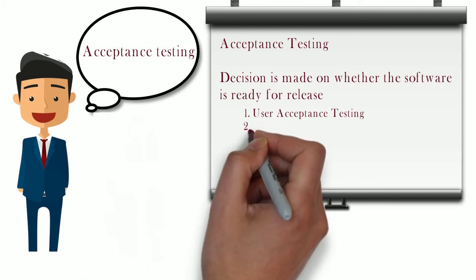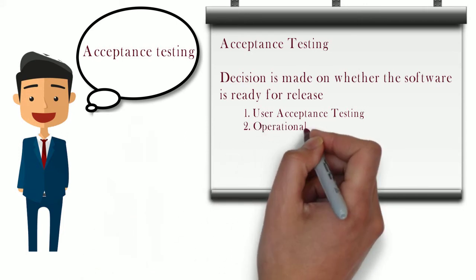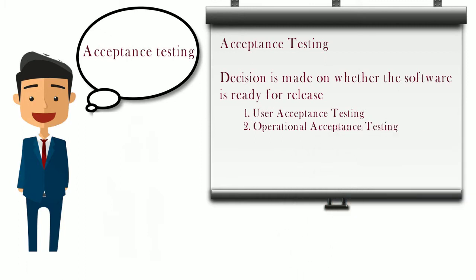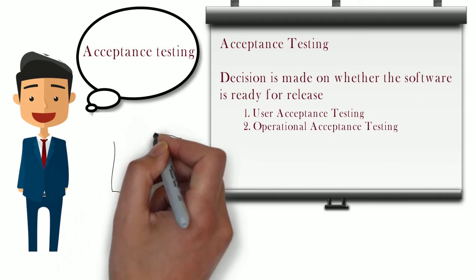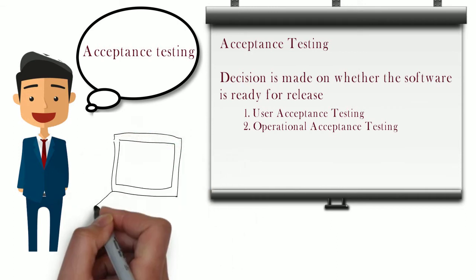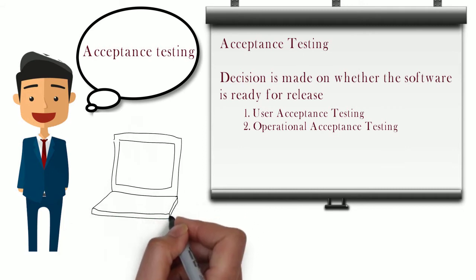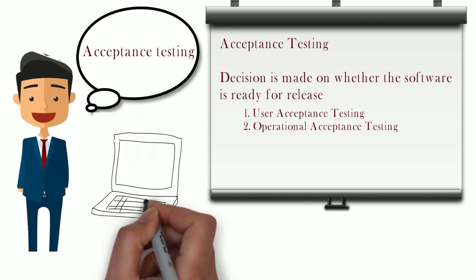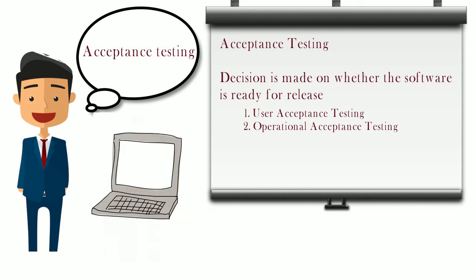The next type is operational acceptance testing, which helps decide whether the system meets operational requirements like backup and recovery, disaster recovery, security vulnerabilities, or maintenance. In our example, when a customer registers, their information is captured and stored. The shopping website must ensure that none of the customer's information is shared with any third party, so security and privacy are provided — this testing finds security vulnerabilities.